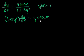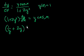We still haven't fully separated the y's and the x's. Let's divide both sides of this by y. We get 1/y plus 2y squared divided by y, that's just 2y, times dy/dx is equal to cosine of x.